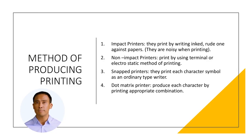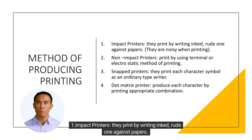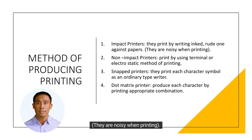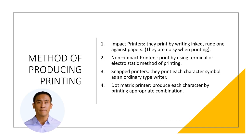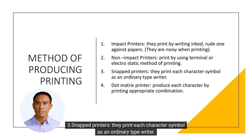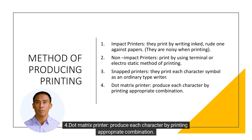Methods of producing printing: 1. Impact printers — they print by pressing inked ribbon against paper; they are noisy when printing. 2. Non-impact printers — print by using thermal or electrostatic methods. 3. Snap printers — print each character symbol as an ordinary typewriter. 4. Dot matrix printer — produces each character by printing an appropriate combination.